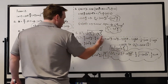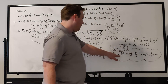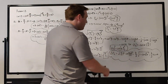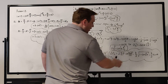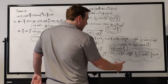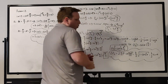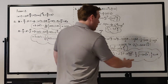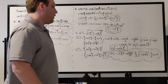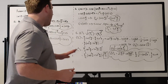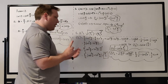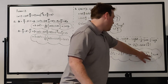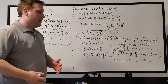Plugging into the uncertainty formula: ΔSz = √(ℏ²/4 − (ℏ²/4)cos²θ). We factor out ℏ²/4, pulling it outside the square root as ℏ/2, leaving √(1 − cos²θ) inside. Since cos²θ + sin²θ = 1, we have 1 − cos²θ = sin²θ. The square root of sin²θ is sinθ, so the uncertainty is ΔSz = (ℏ/2)sinθ.